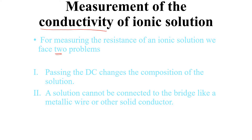When you want to calculate conductivity using experiment, we face two problems. First, passing DC (direct current) changes the composition of the solution — the concentration may be changed. Second, the solution cannot be connected to the bridge like a metallic wire or other solid conductor.